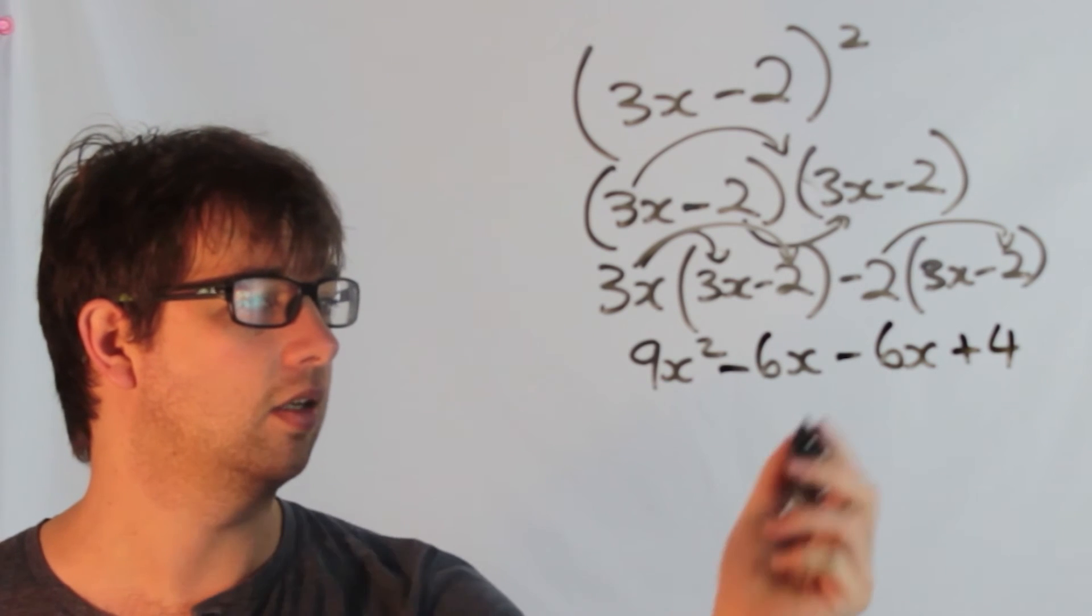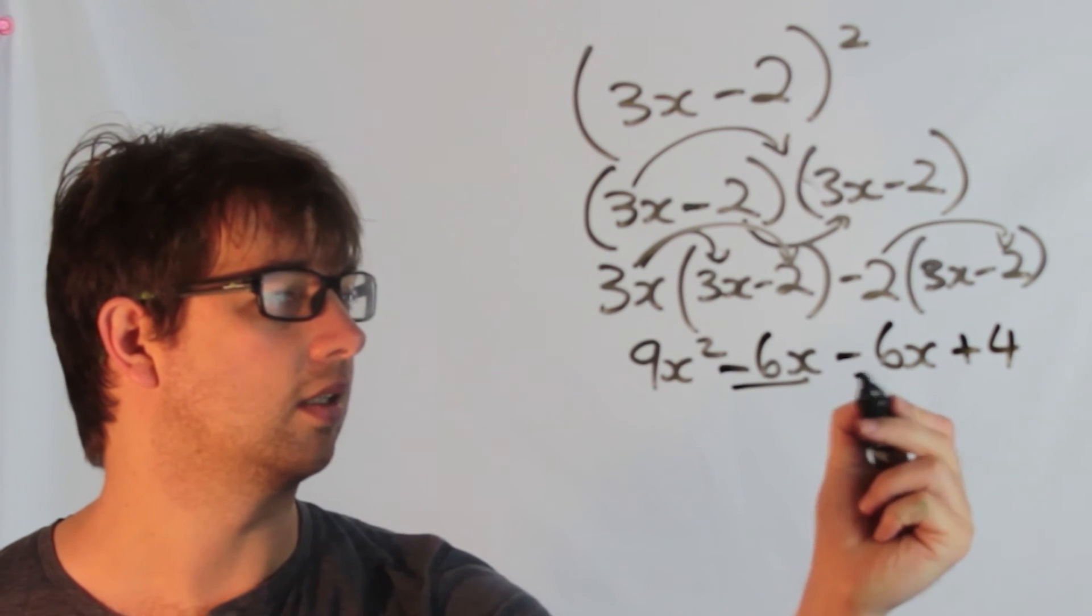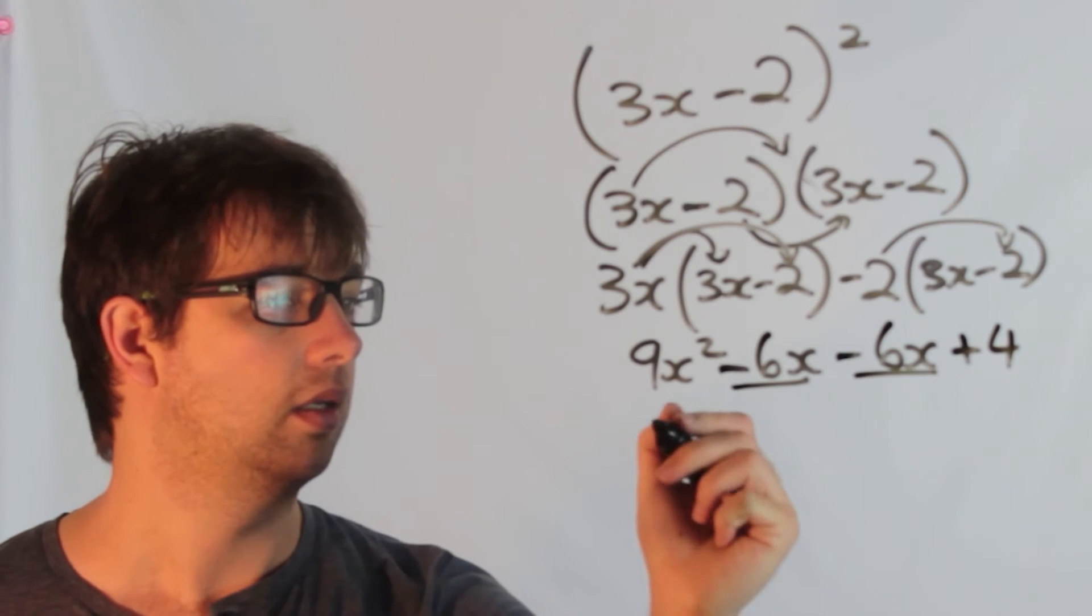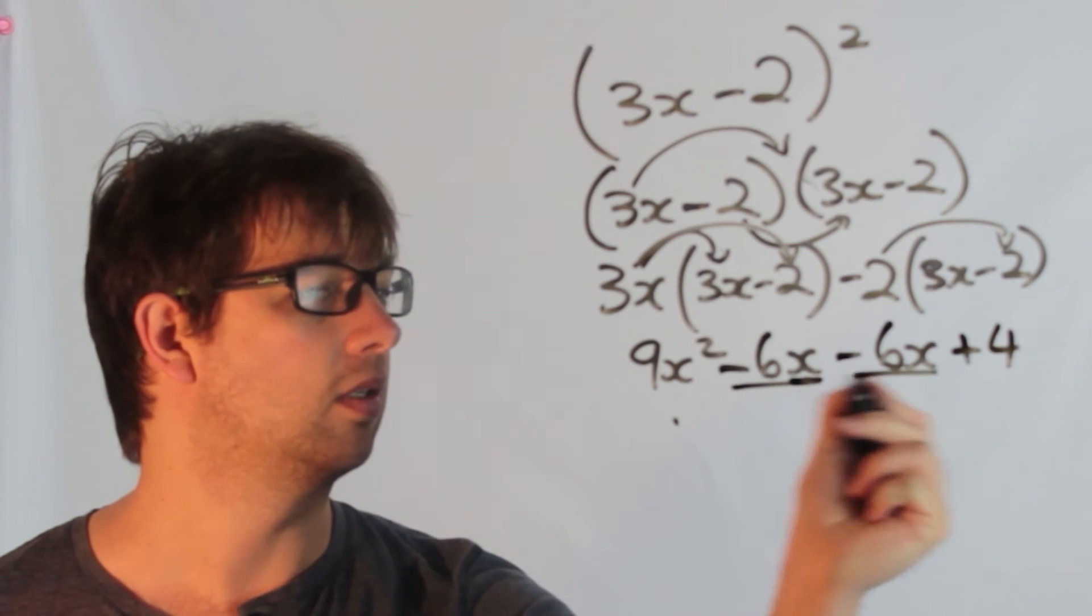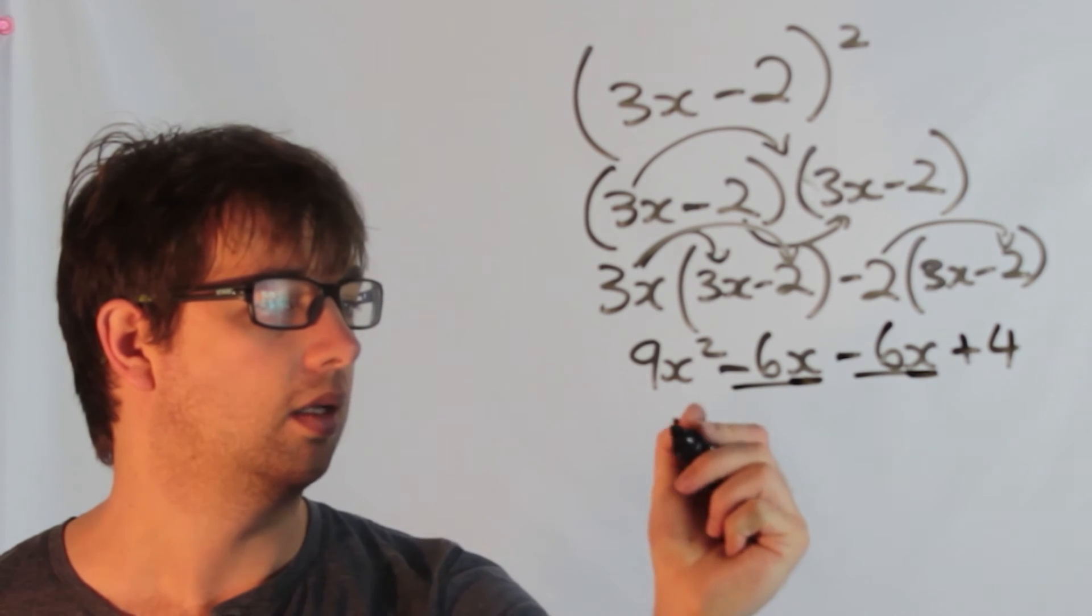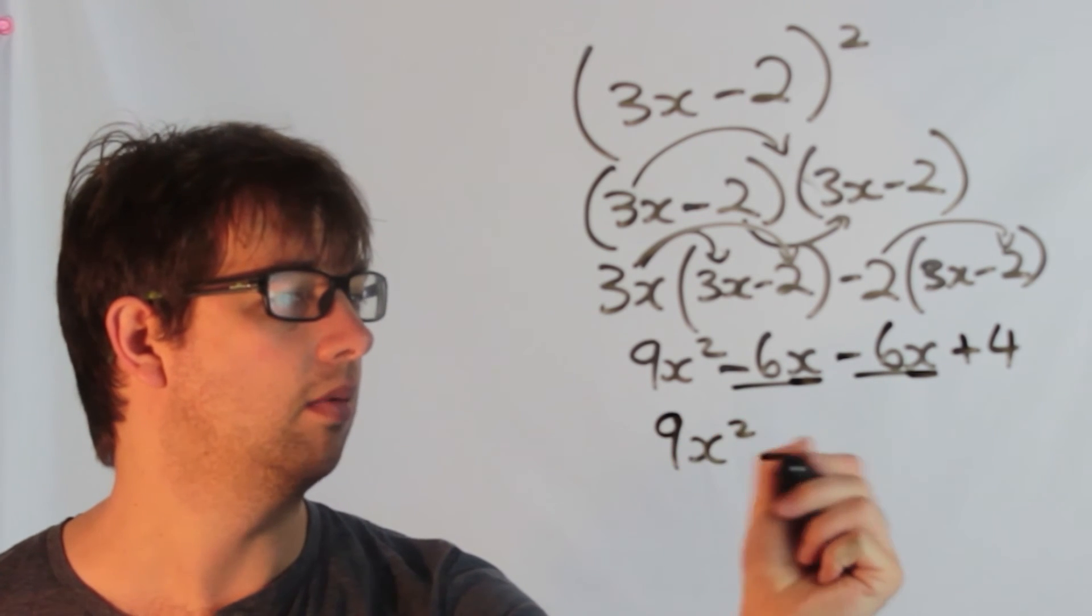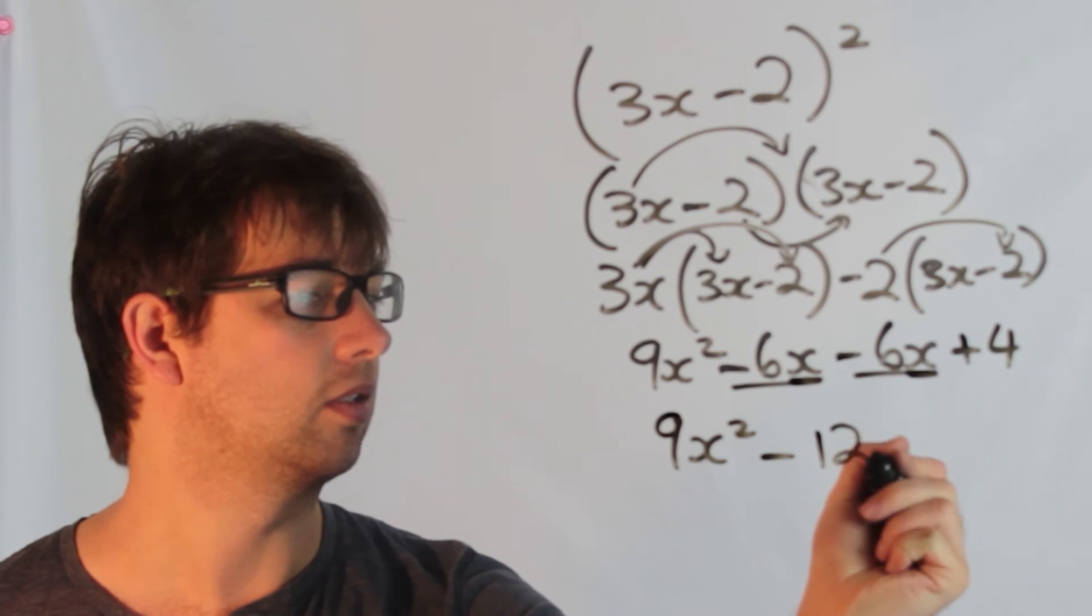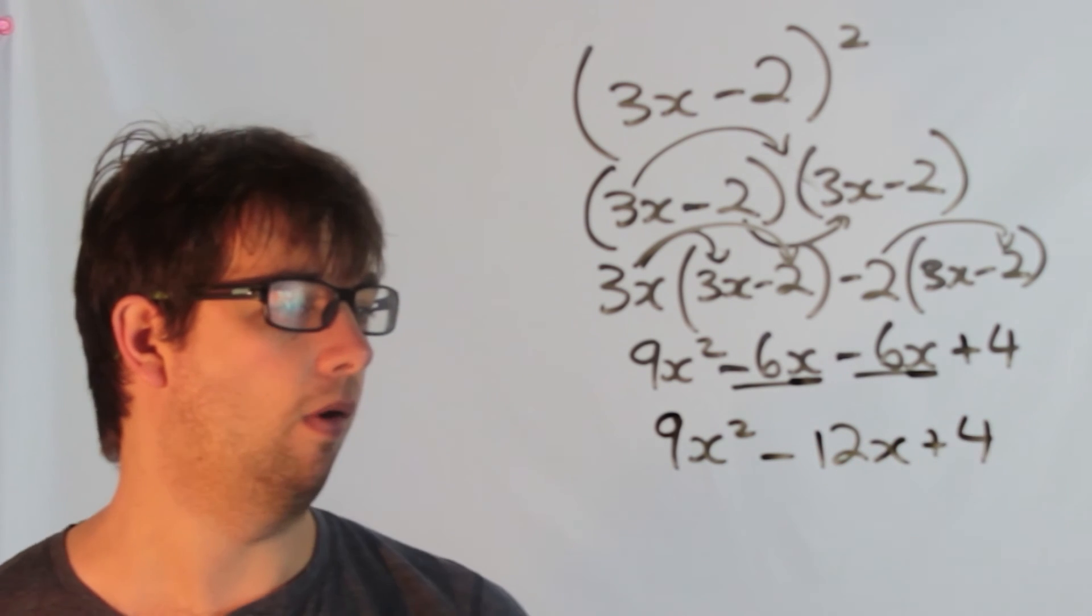I can look at the like terms. I've got negative 6x, negative 6x. They're like because they both have x terms. So I've got 9x squared minus 12x altogether plus 4.